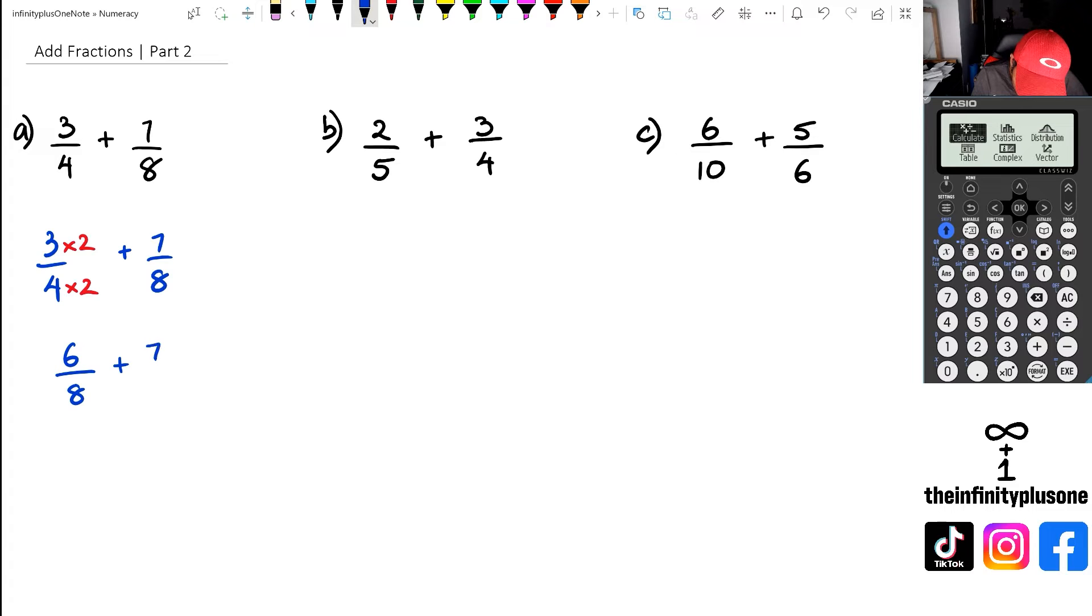So we've got six over eight, plus seven over eight. Now that our denominators are the same, we can actually combine the denominator. And then we say six plus seven, which equals to 13.